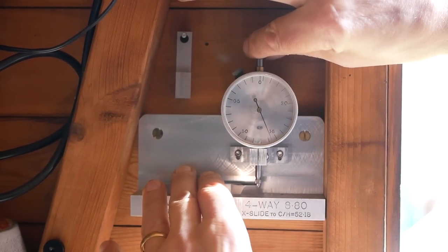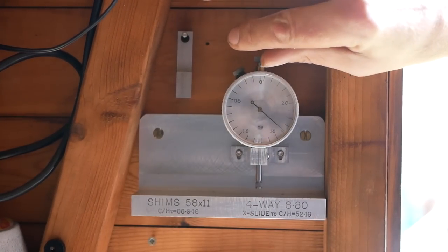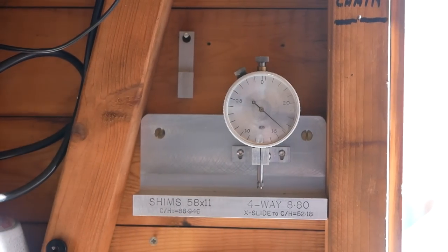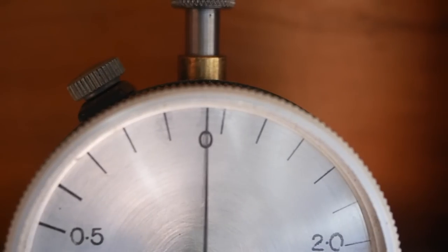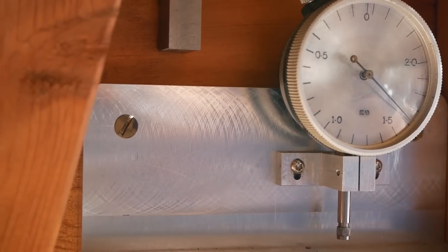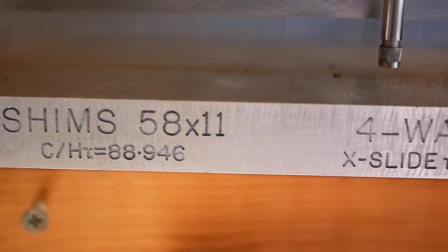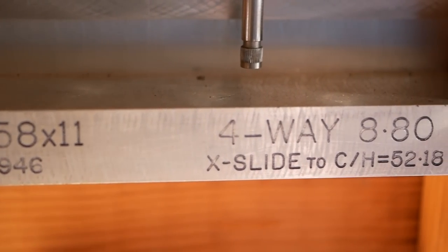Here we show a fixture of our own design which allows the shim size to be read directly from the DTI dial. This requires the DTI dial to be numbered in reverse. We will show the process of manufacturing this dial in a future video.